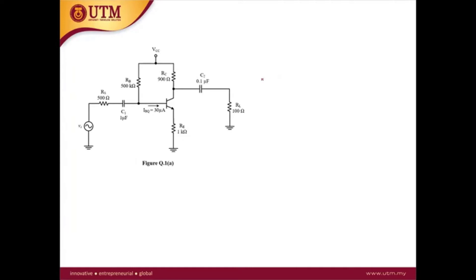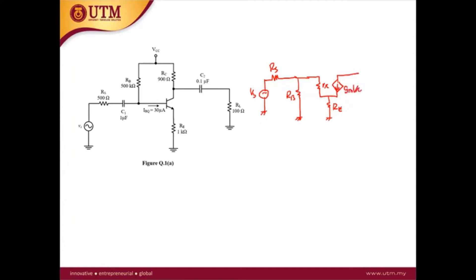For question A, I recommend drawing the mid-band equivalent circuit first. The circuit includes Vs and RS at the input, then Rb, and between base and emitter we have Rpi. At the emitter there is Re, and a current source Gm·Vpi, where Vpi is the voltage across Rpi. Since VA is infinity, R0 is also infinity. At the collector, it connects to RC and RL.